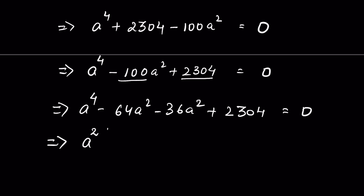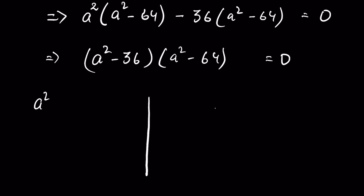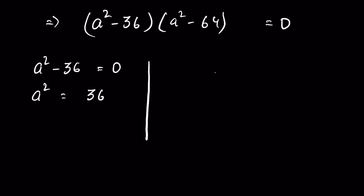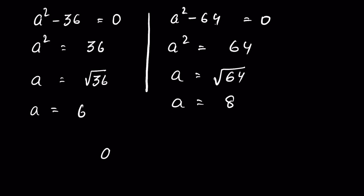Taking a² as common from groups: (a² − 36)(a² − 64) = 0. Two solutions for a: when a² − 36 = 0, then a² = 36, so a = 6. When a² − 64 = 0, then a² = 64, so a = 8. Therefore a is 6 or 8.